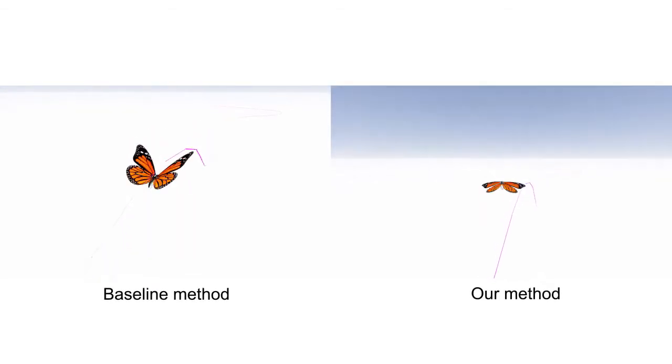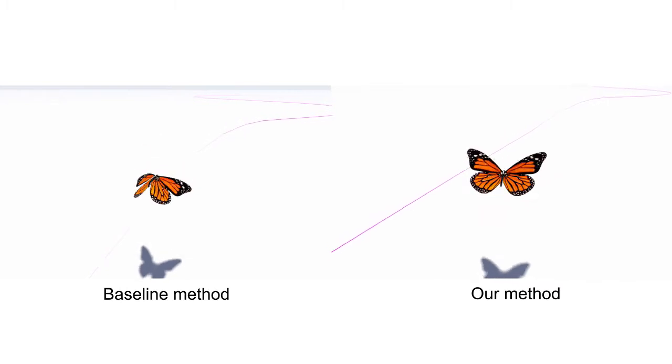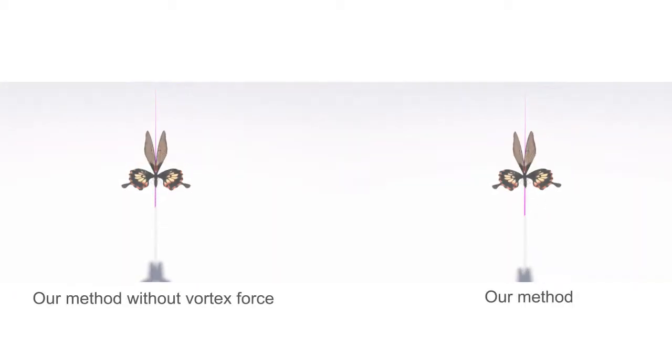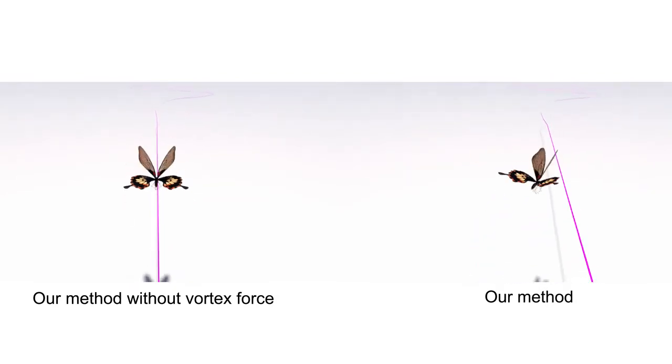In this comparison experiment, we chose the de facto CycleFrames animation as the baseline approach. The simulated butterfly without the vortex force loses the dynamics although it still can faithfully fly along a specified path.